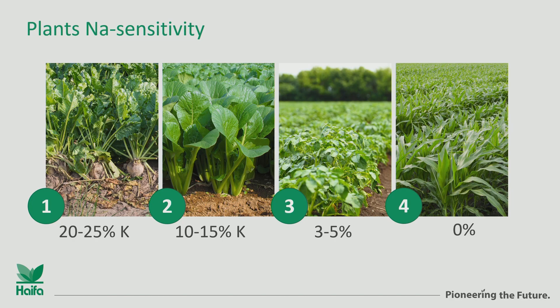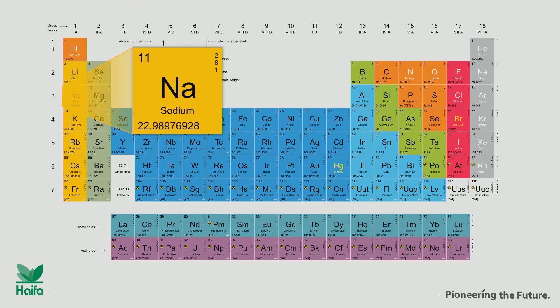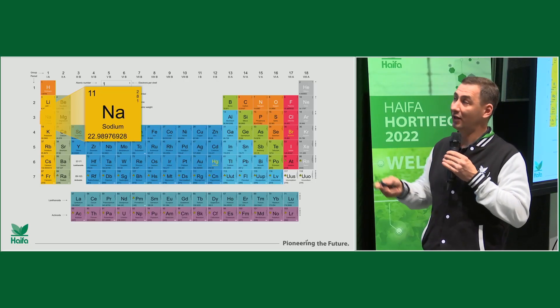Why do we speak about potassium when we speak about sodium? We say that the plant can tolerate 3-5% of sodium compared to the total potassium demand. When you look at the periodic table, you can find sodium here and potassium here - it is the same group of alkalic metals. The physical and chemical properties of sodium and potassium are quite similar, and plants can use them in a similar way.